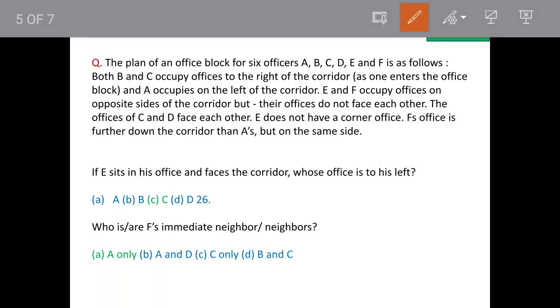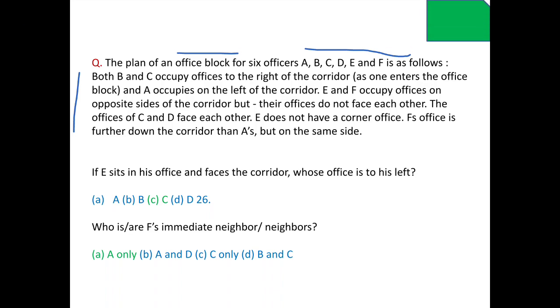We have a question on caselet. It says the plan of an office block for six officers A, B, C, D, E, and F is as follows. Certain arrangements are given. Based on this arrangement, we have to find out who is sitting next to whom in his office. So there is a question, we will see the solution.